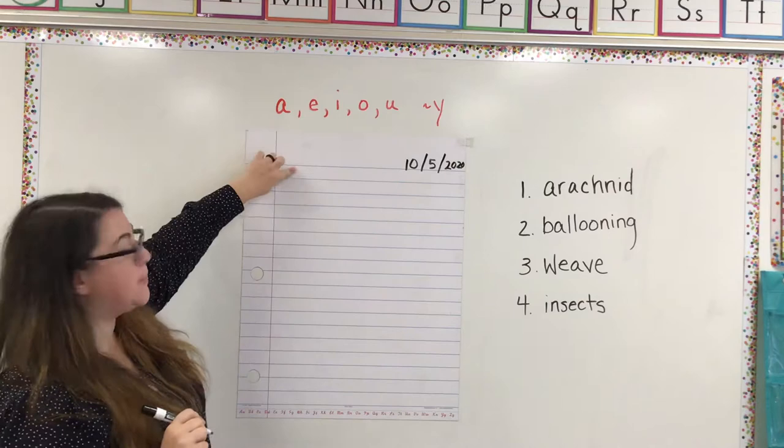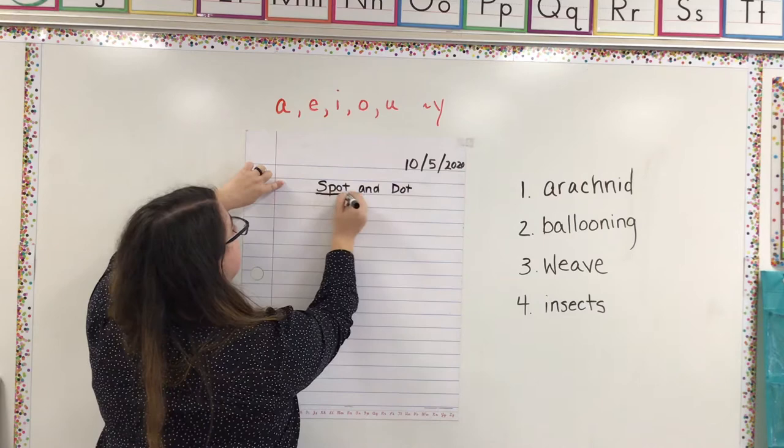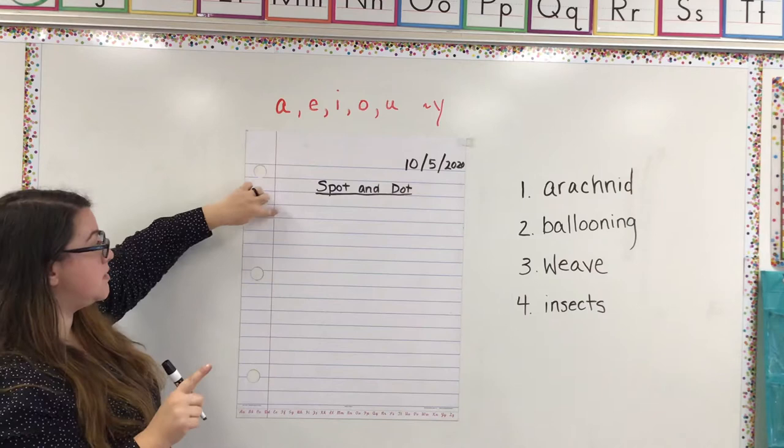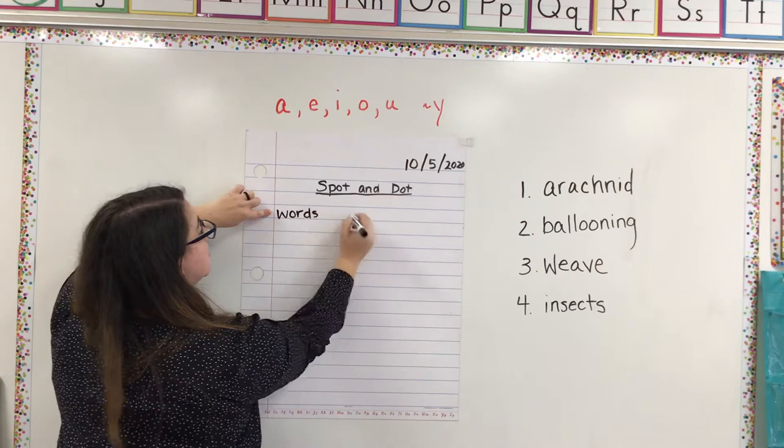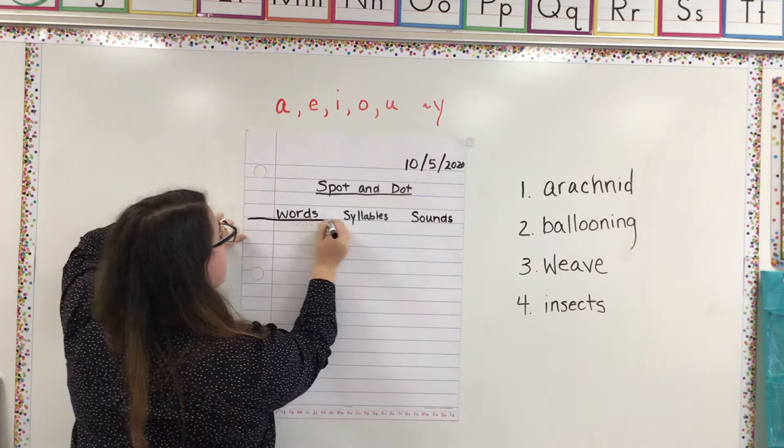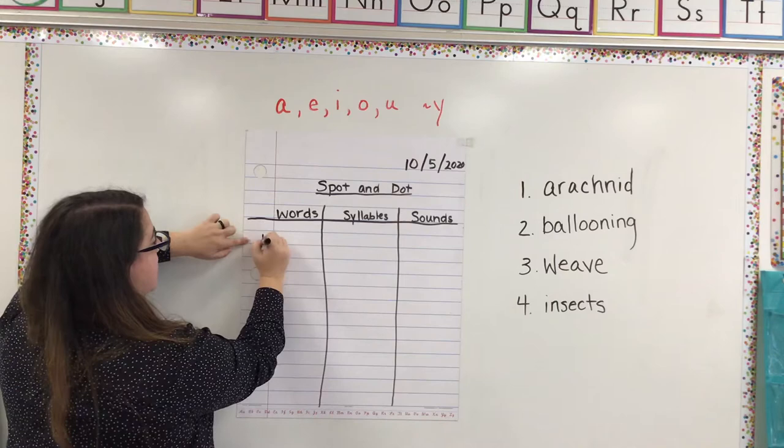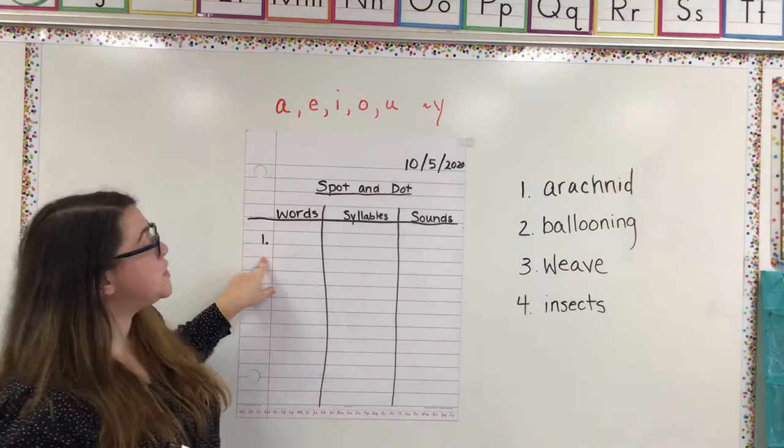And now I know we're going to skip a line, and then we're going to write our title, spot and dot. And I'm going to give that a little underline. Now I know that we skip another line, and we're going to write words, syllables, and sounds. We're going to run the underline under that, and we're going to run our lines all the way down our page. And then I'm going to skip another line and write number 1 on the left side of my red line.